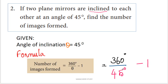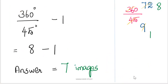We substitute theta into the formula: number of images equals 360 divided by theta, minus 1. So, 360 divided by 45, minus 1. Calculating 360 divided by 45: simplify using tables — 72 divided by 9 equals 8. So 8 minus 1 gives 7 images. The answer is 7 images.